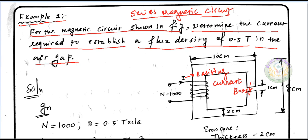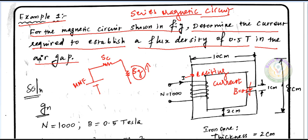Now, how do we draw this particular circuit? The magnetic core has reluctance Sc, and the air gap has reluctance Sg. In a magnetic core, flux faces an opposing force called reluctance. Just like in an electric circuit where current faces resistance, in a magnetic circuit flux faces reluctance.